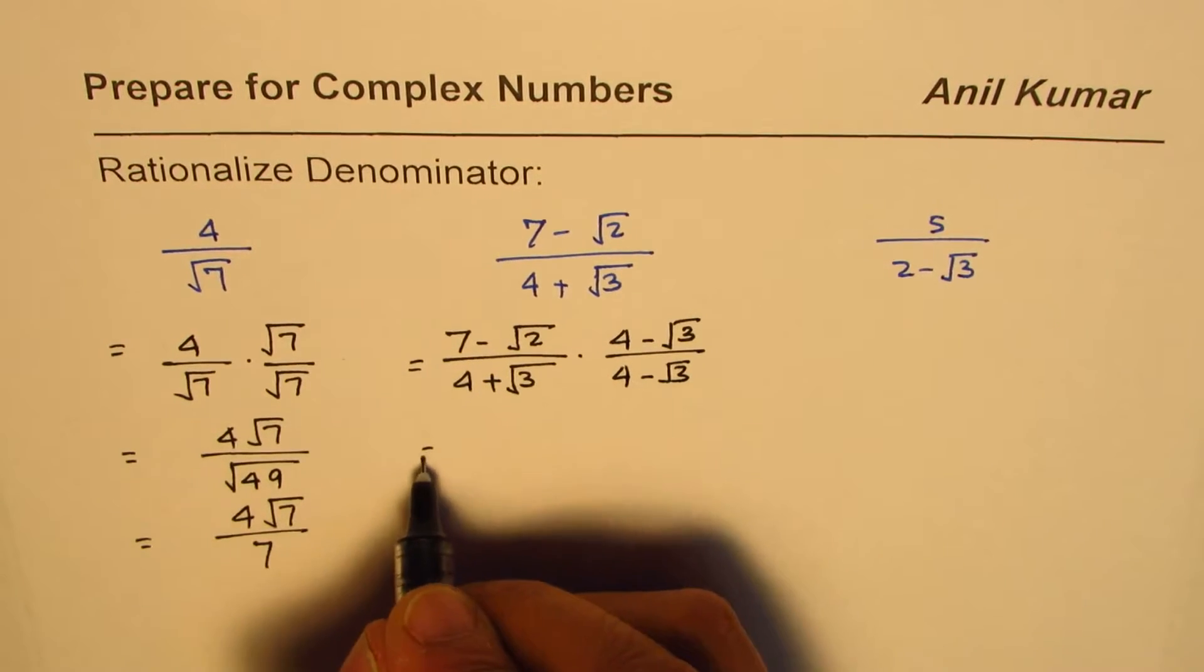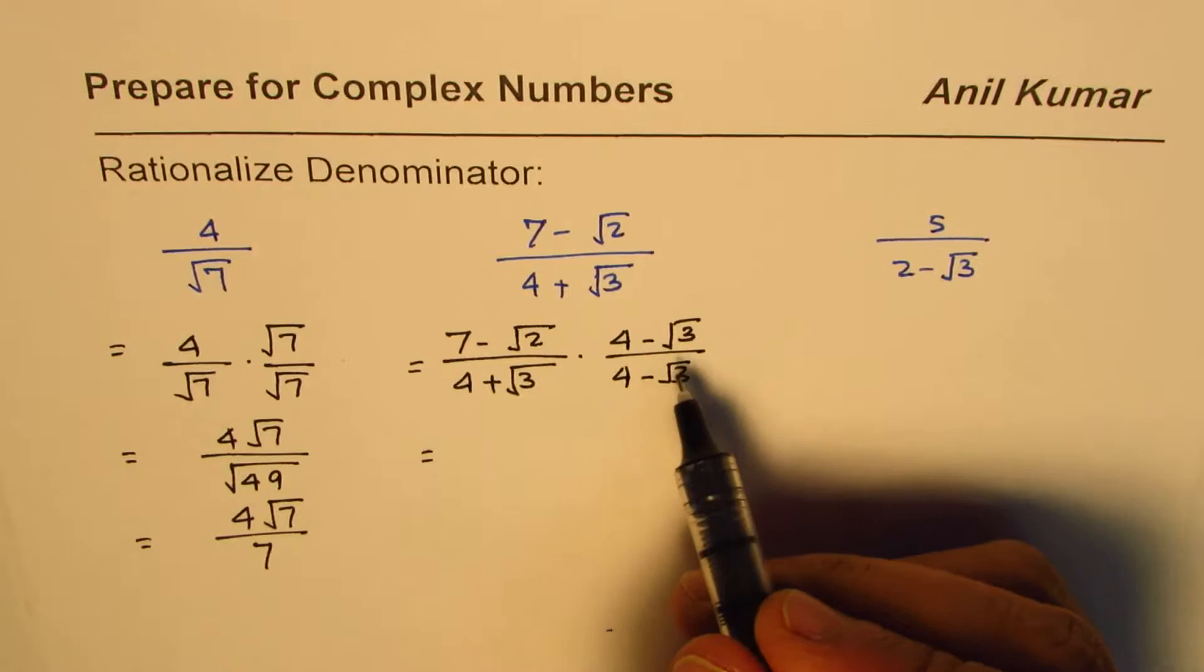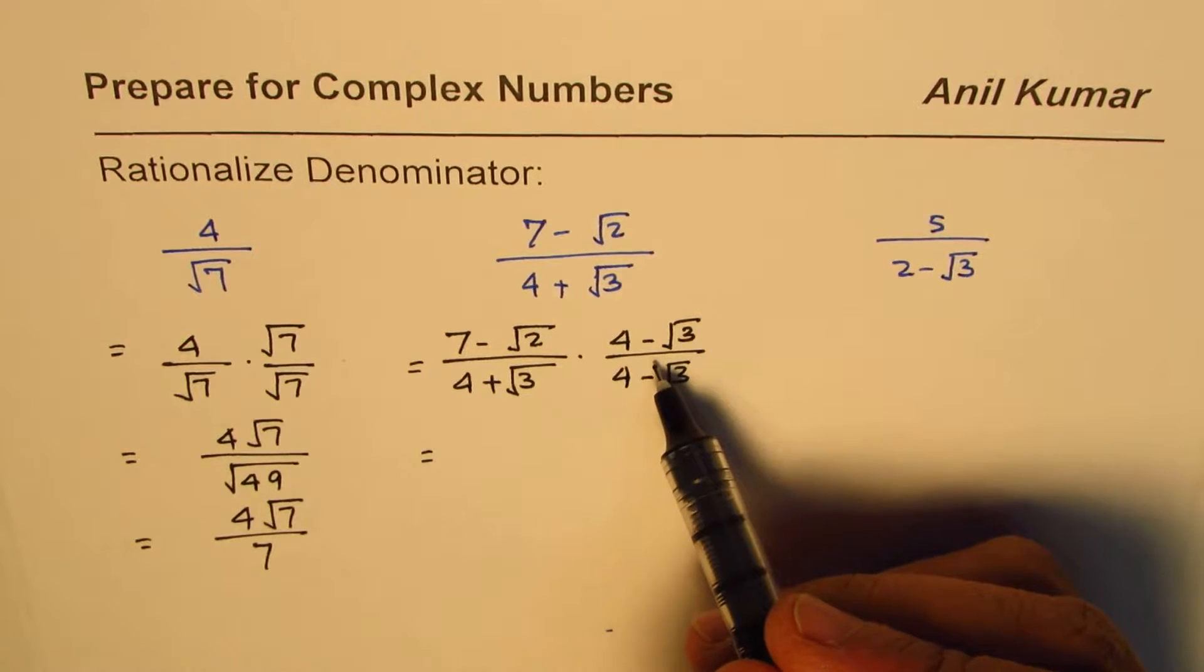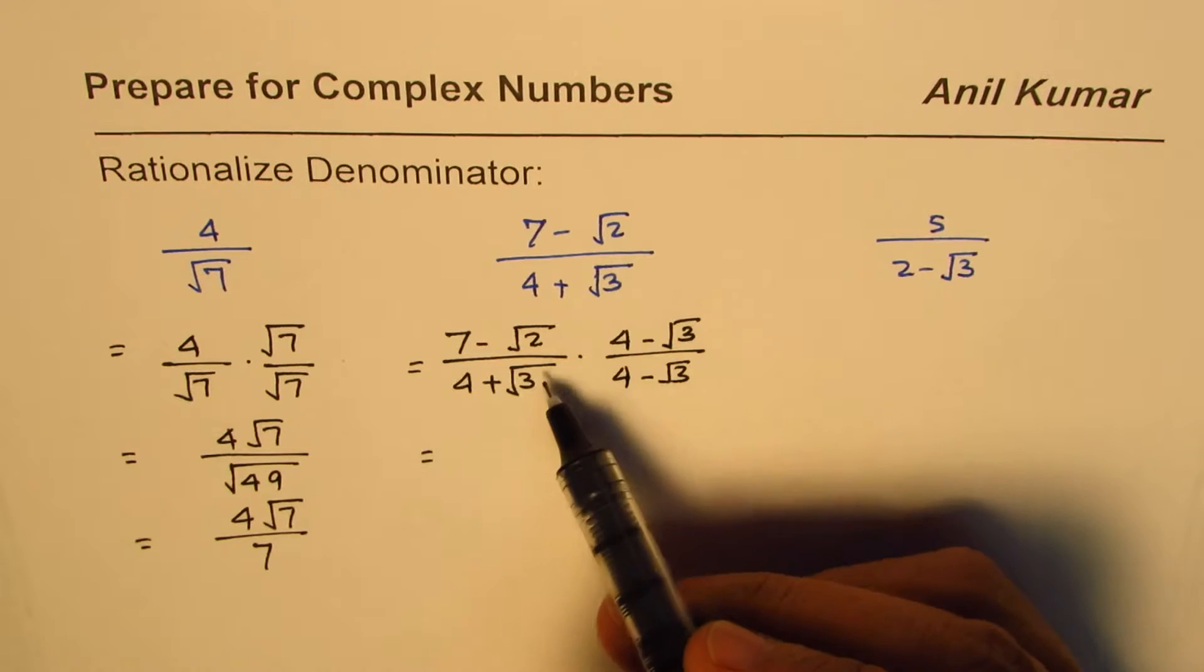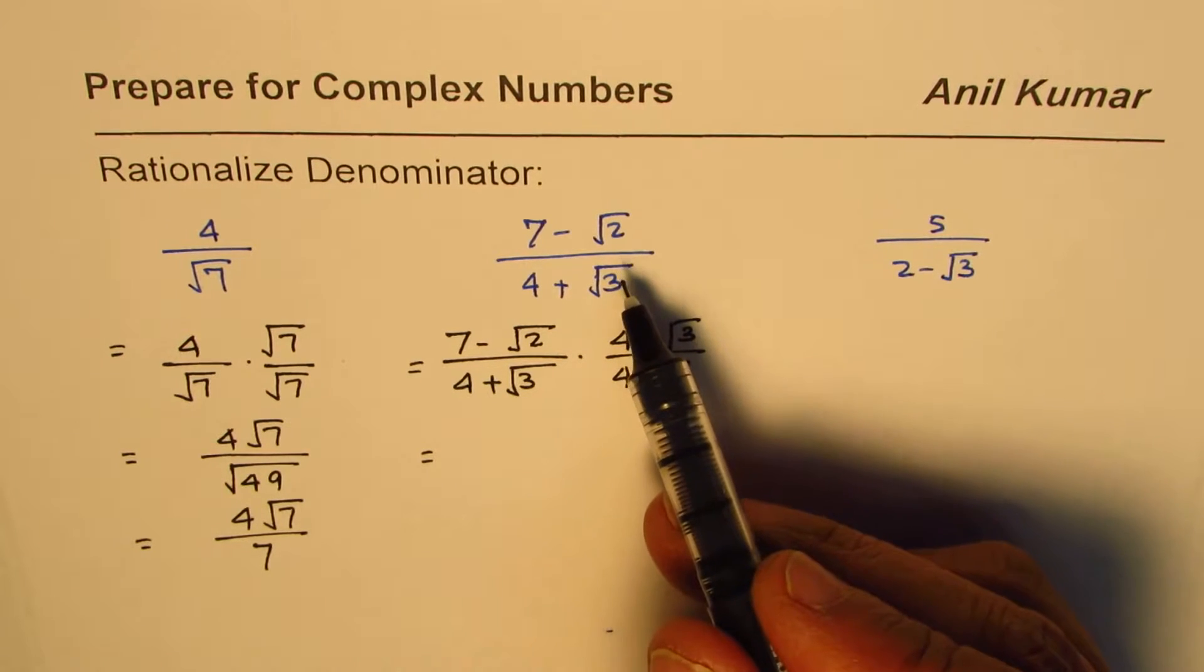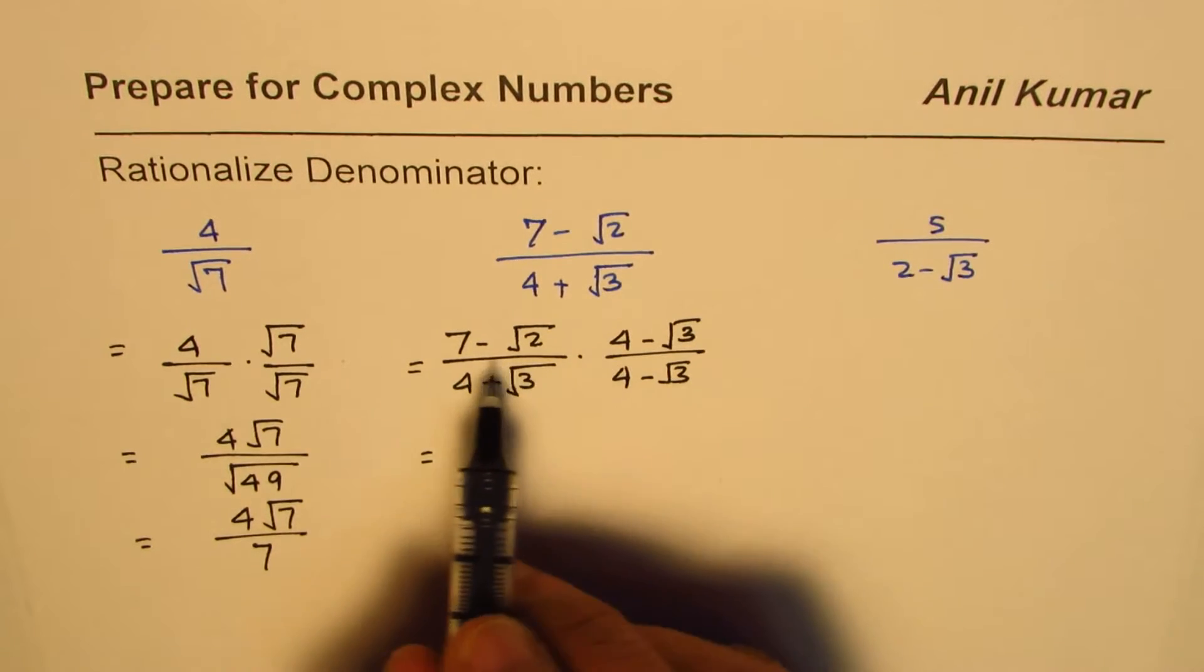Now since we are actually multiplying and dividing by the same number, it's as good as multiplying by 1, so we are not changing the expression. It is exactly the same as given to us. Now we can apply the distributive property in the numerator to expand and simplify it.